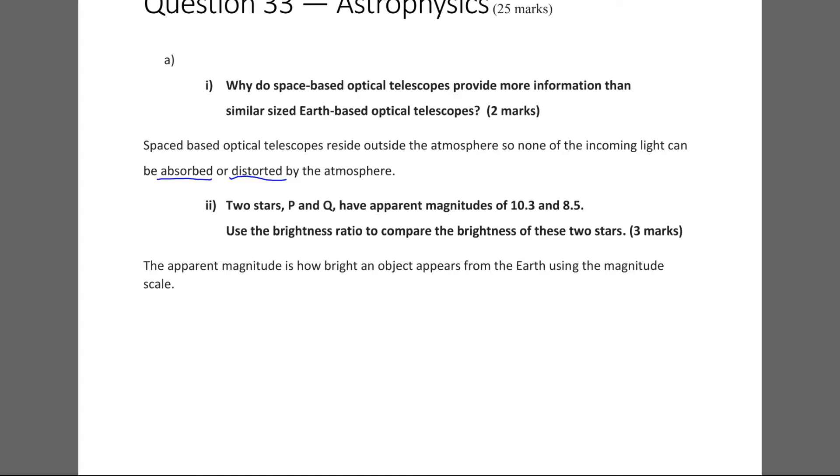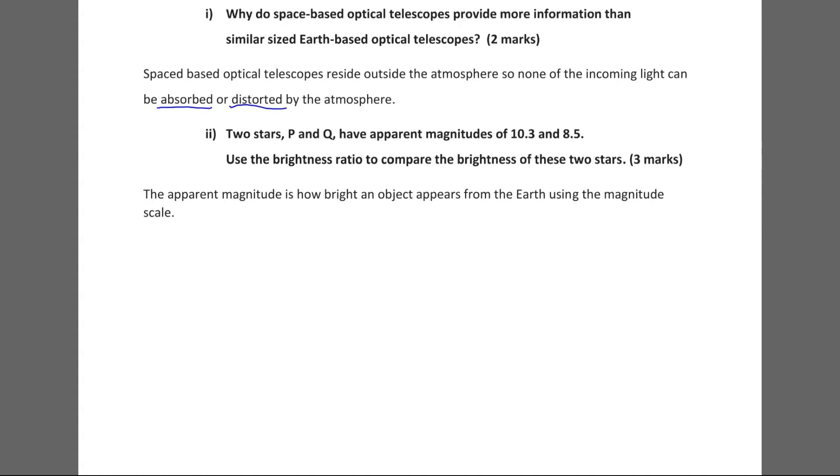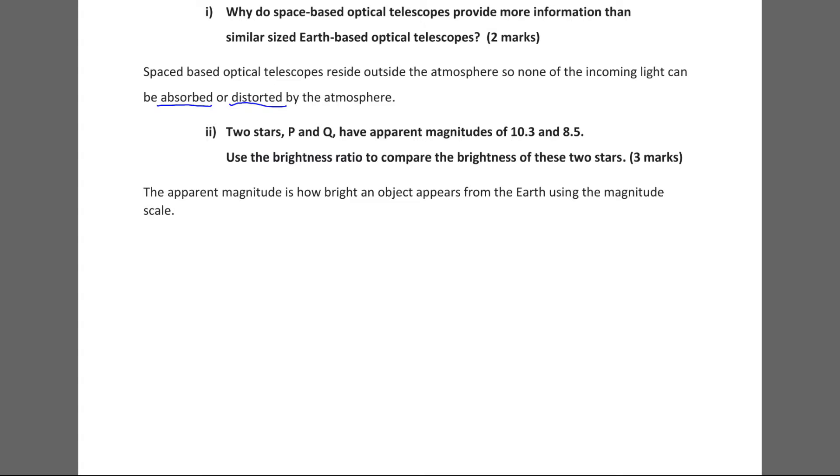Part two asks: two stars, P and Q, have apparent magnitudes of 10.3 and 8.5. Use the brightness ratio to compare the brightness of these two stars. That's a three-mark question. So I've written here, the apparent magnitude is how an object appears from Earth using the magnitude scale. So you don't have to include that in your answer, I just put that there so people would know what I'm talking about in case they weren't sure.